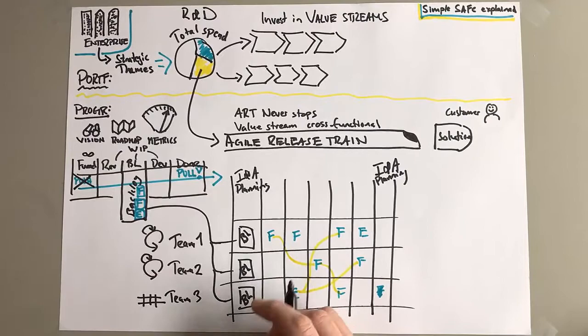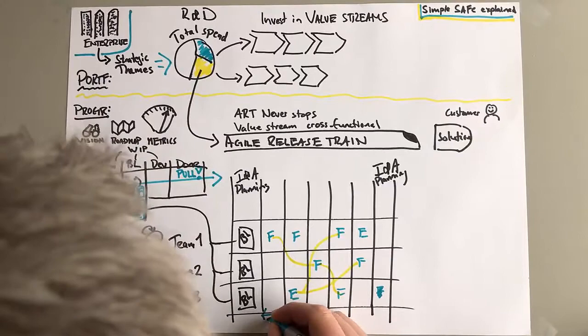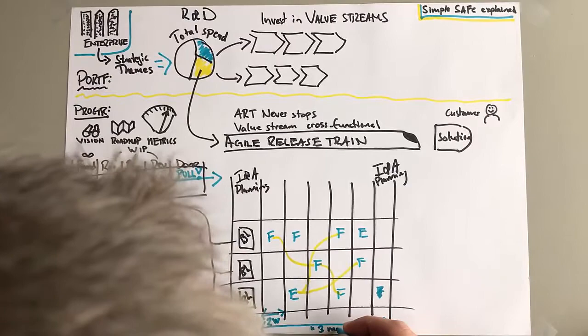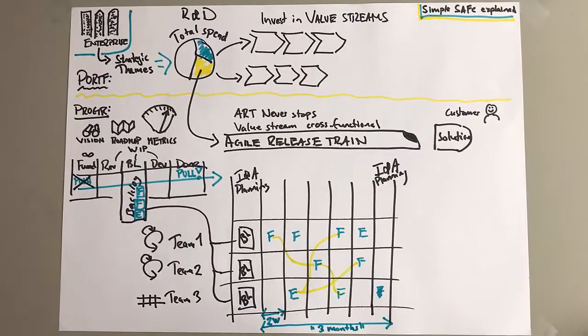So you have a dependency map. And the magic here is going to happen when you do it together and you do it visually. That's when you really have a benefit of it. So we're working in a cadence, we're working in time boxes.